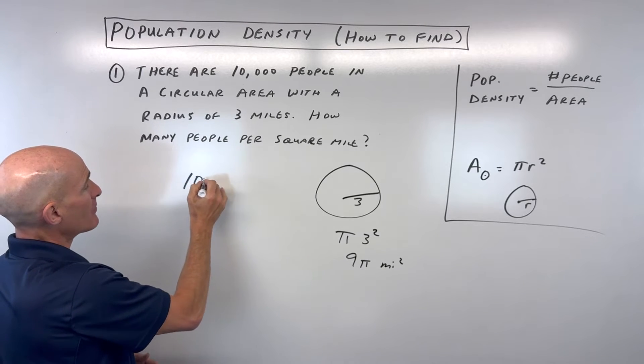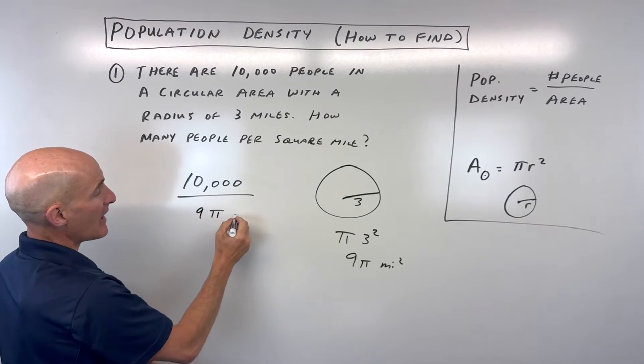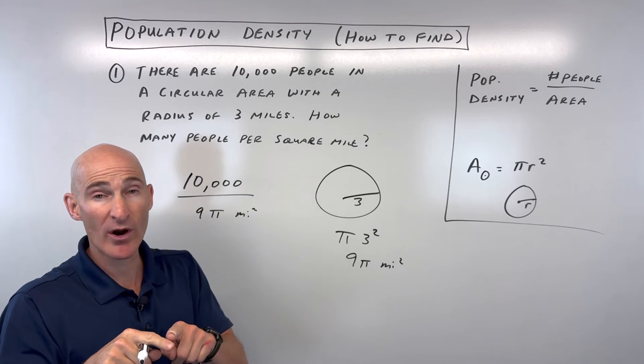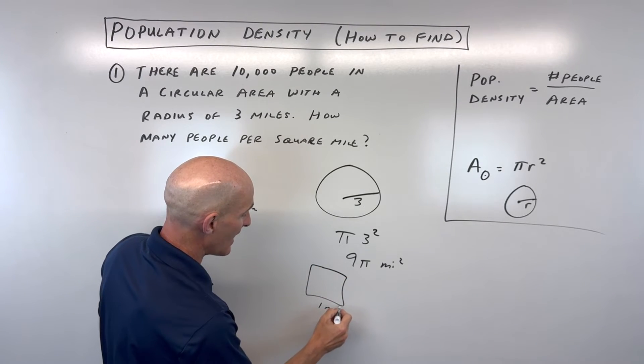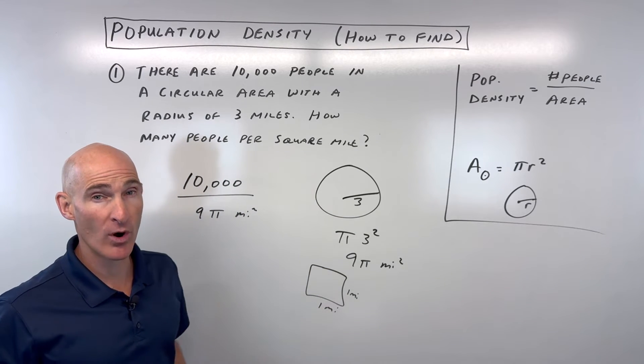So we're going to take our number of people, 10,000 people, divided by nine pi square miles. And we're going to get the people per just one square mile. So if you had a square that was one mile on a side, how many people would there be in that one by one square mile?